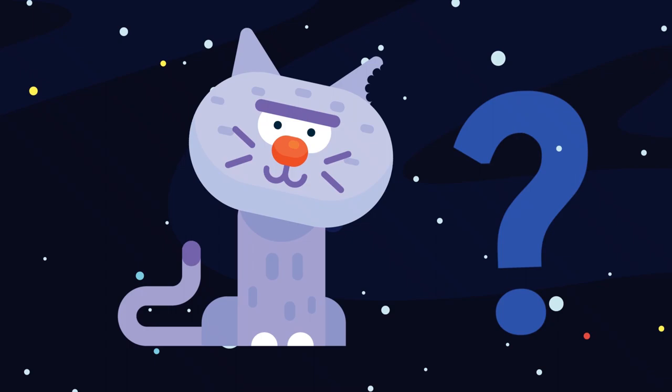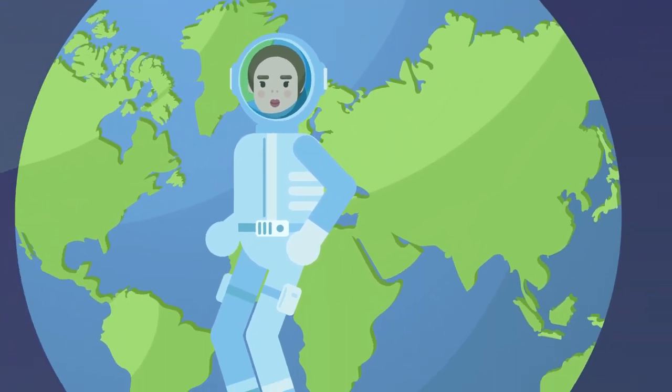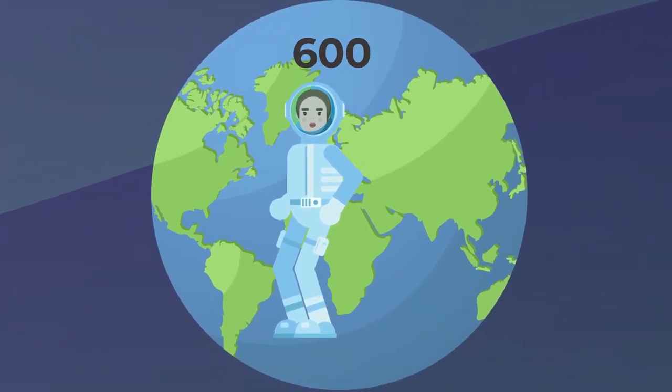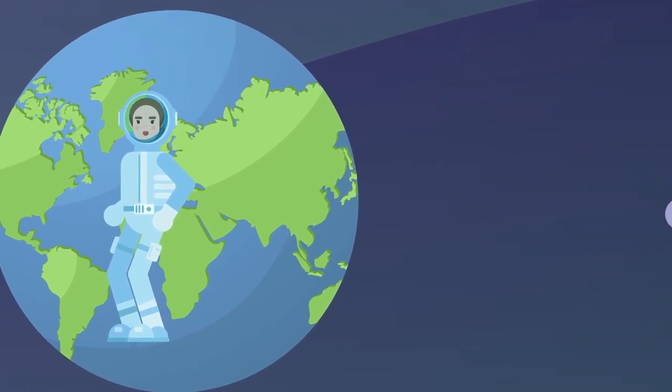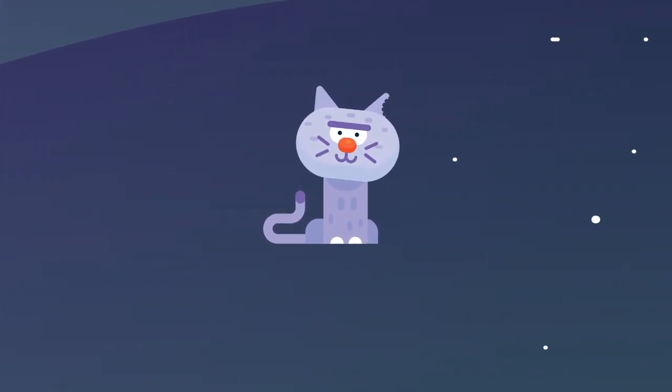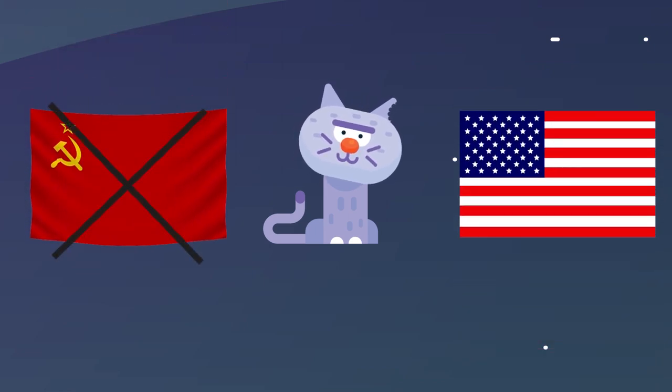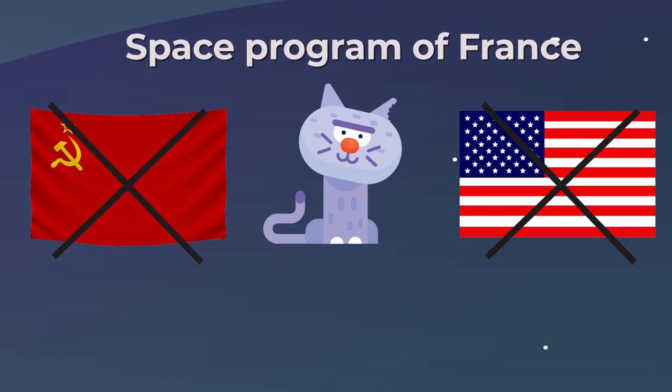But what about cats in space? Approximately 600 people have traveled outside the Earth. There were probably more animals, especially if you count each fly separately. But there was only ever one cat among them. And this event is not one from the Soviet Union, nor from the American side of things. This astronaut cat was an achievement of the space program in France.